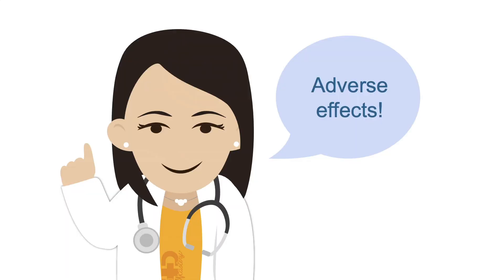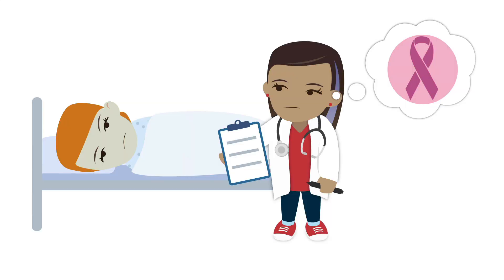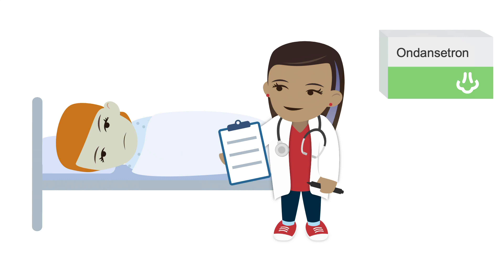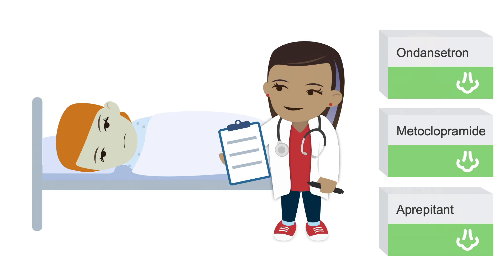Note that many of these medications come with significant adverse effects, which we will discuss in later lessons. Also, note that you don't have to stick to one class of medications. Say your patient has chemotherapy-induced nausea and vomiting — this is often evoked by the chemoreceptor trigger zone, so you might target the serotonin pathway, starting with ondansetron. If the patient continues to have nausea despite regular use of ondansetron, you might add on a dopamine antagonist like metoclopramide. Then, if they continue to have symptoms, you might reach for an NK1 antagonist like aprepitant. There is not much evidence to suggest superiority of one regimen over another, so you often have to find the right combination of medications for your patient.